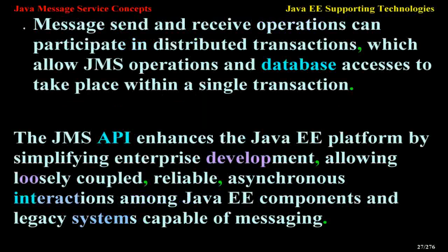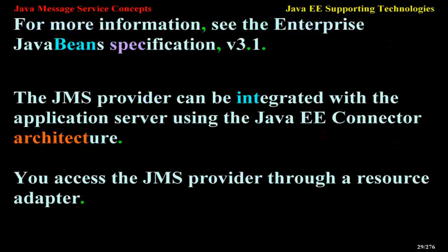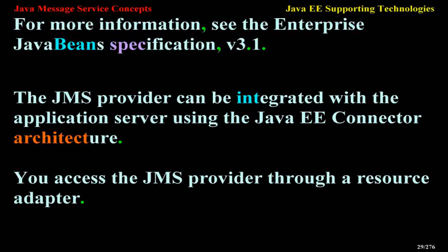The JMS API enhances the Java EE platform by simplifying enterprise development, allowing loosely coupled, reliable, asynchronous interactions among Java EE components and legacy systems capable of messaging. A developer can easily add new behavior to a Java EE application by adding a new message-driven bean to operate on specific business events. The Java EE platform enhances the JMS API by providing support for distributed transactions and allowing for the concurrent consumption of messages. The JMS provider can be integrated with the application server using the Java EE Connector Architecture.